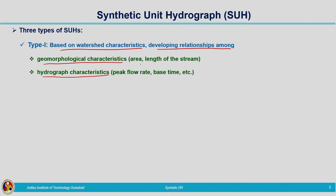Geomorphology characteristics include area, length of the stream, drainage density, stream density, etc. Hydrograph characteristics include peak flow rate, base time, and time to peak. There are different synthetic unit hydrographs developed based on this principle. Some examples are Snyder's synthetic unit hydrograph and Gray's synthetic unit hydrograph.